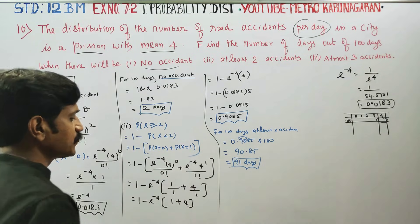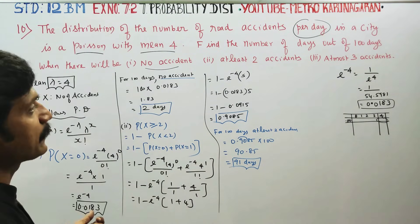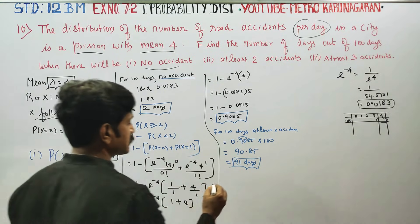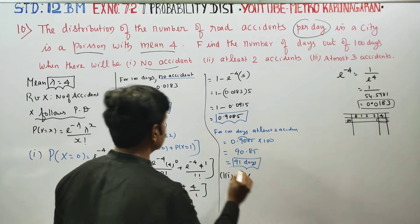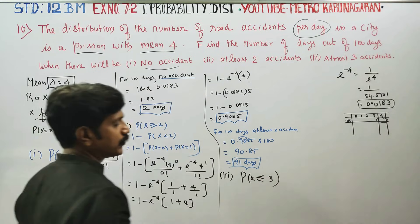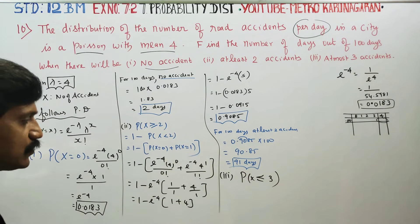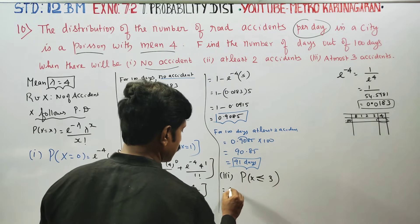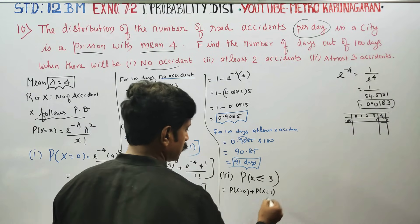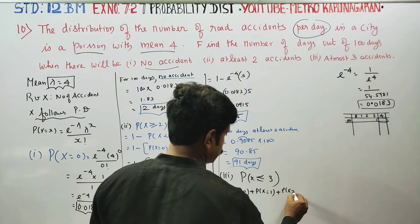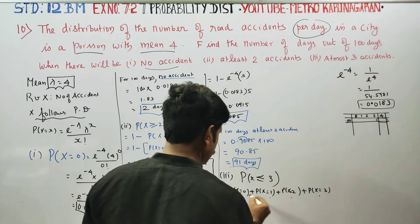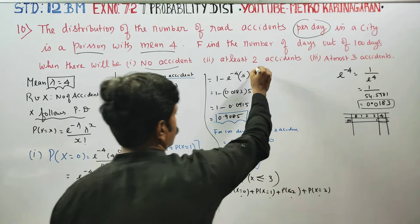The last case: at most 3 accidents. At most means less than or equal to, so we need P(X ≤ 3). This is the sum of P(X=0) plus P(X=1) plus P(X=2) plus P(X=3), i.e., 4 terms from x=0 to x=3.